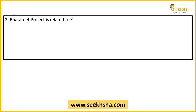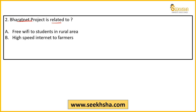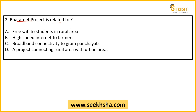Second question: Bharat Net Project is related to — option A: free wifi to students in rural areas, option B: high speed internet to farmers, option C: broadband connectivity to gram panchayats, option D: a project connecting rural areas with urban areas, option E: none of the above.